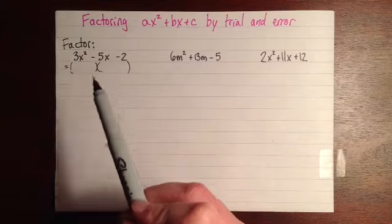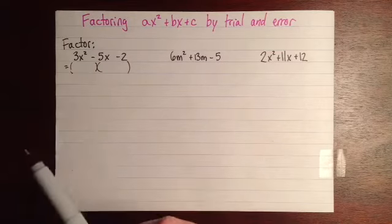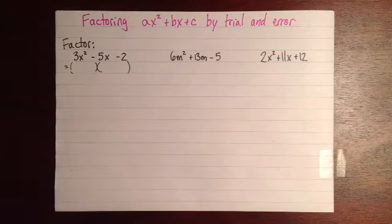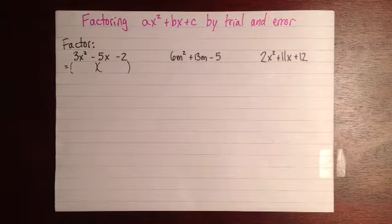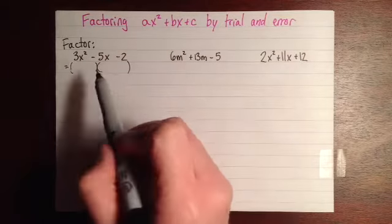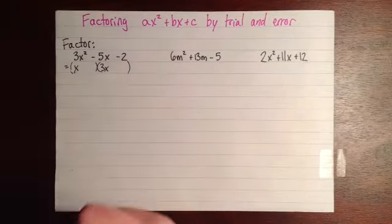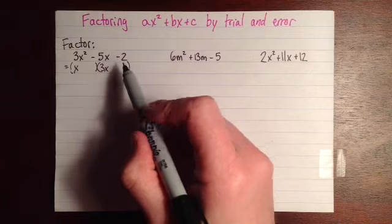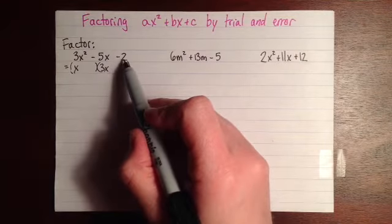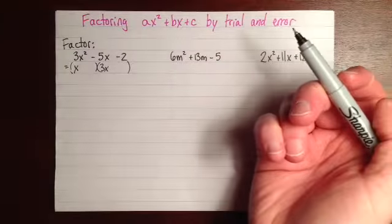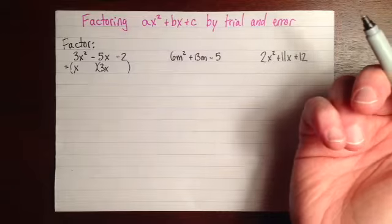So I'm just going to make a guess here, and then we'll check it. And then if it's wrong, I'll just make another guess and we'll check it, and so on. To get 3x squared, I'm basically going to want an x and a 3x. And then to get negative 2, I'm going to want a 1 and a 2, and one will be positive and the other will be negative.